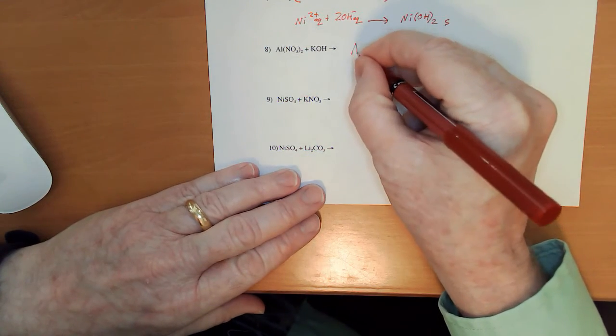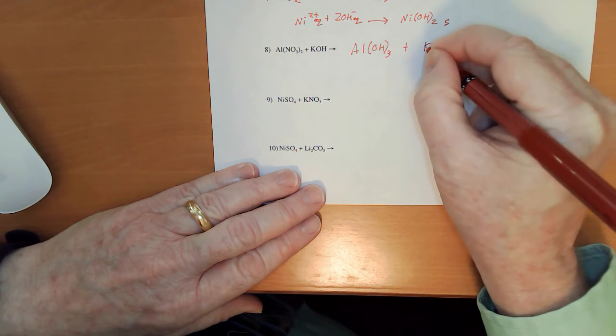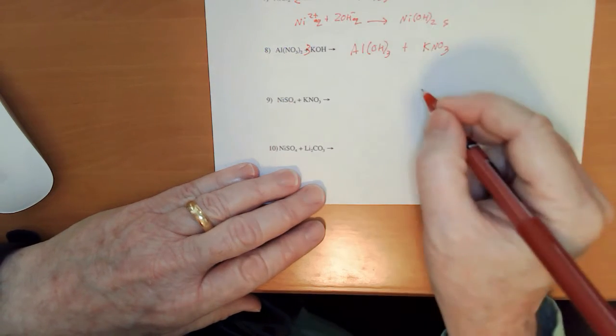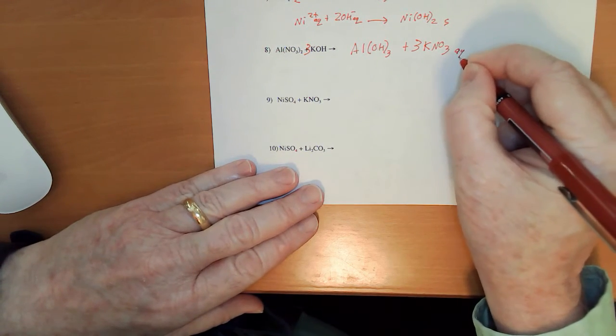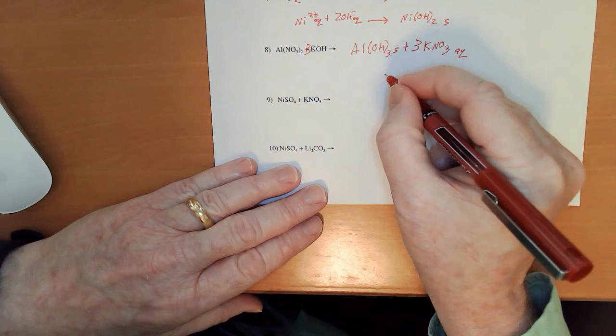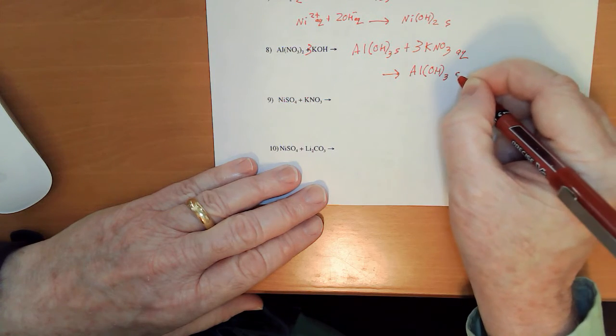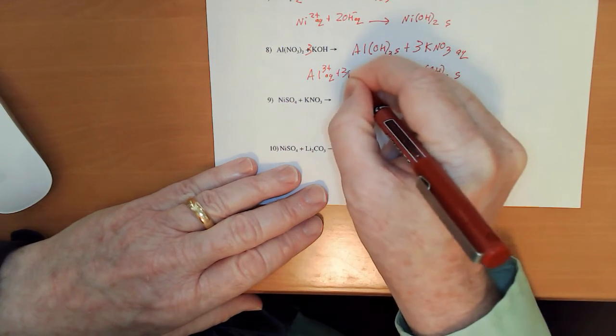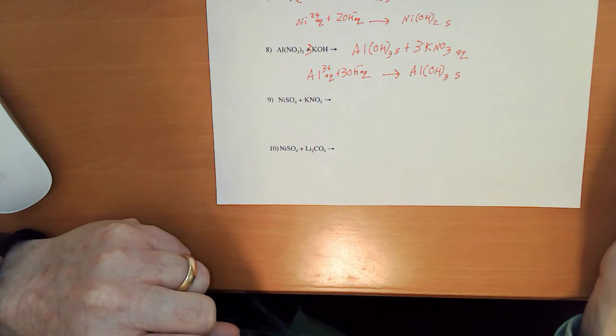Number 8. Al OH sub 3 and KNO3. I'm going to need to put a 3 on the KOH. I'm going to need to put a 3 on the KNO3. Aqueous because of the nitrate or because of potassium. Either way. This is going to be the solid. So Al OH sub 3 solid. We get an Al 3 plus aqueous and 3 OH minus aqueous.